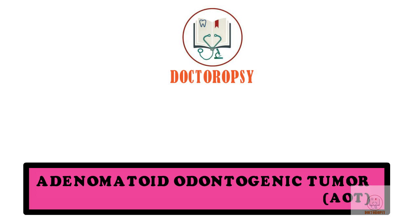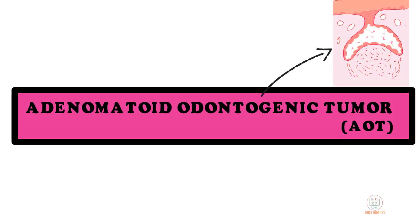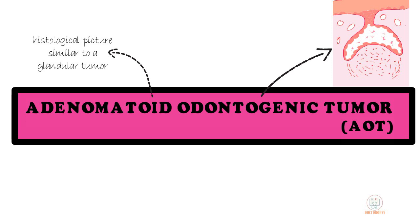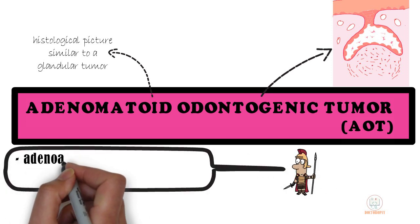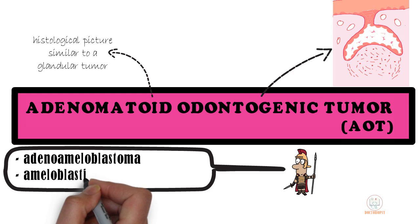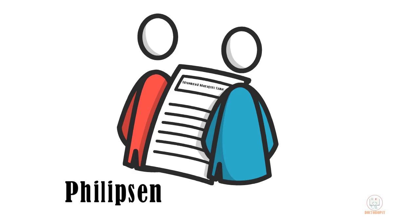Adenomatoid odontogenic tumor, or AOT, is a benign tumor of odontogenic origin seen in the jaws. The term 'adenomatoid' emphasizes the histological picture, which is similar to that of a glandular tumor. Previously, the tumor has also been called adeno-ameloblastoma and ameloblastic adenomatoid tumor, as it was thought to be a variant of ameloblastoma.